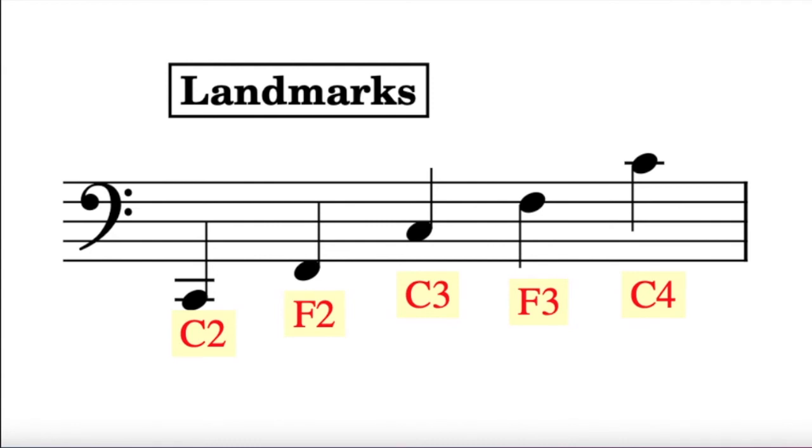A note in the second space from the bottom is the C below middle C, the C3. A note on the fourth line from the bottom, the line where the bass clef starts and its two floating dots surround, is an F. Remember that the bass clef is also known as the F clef.